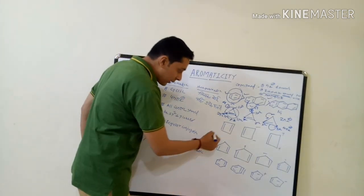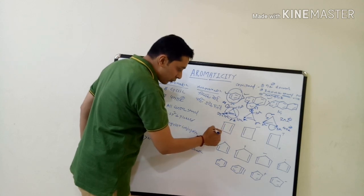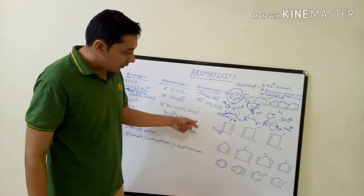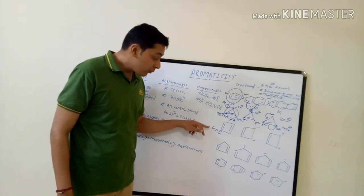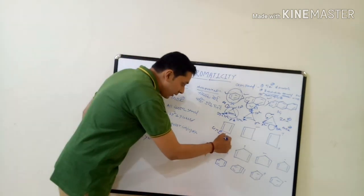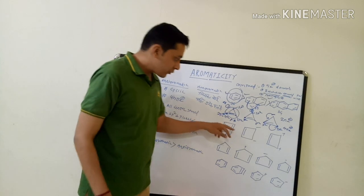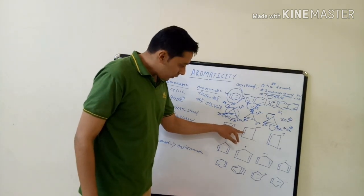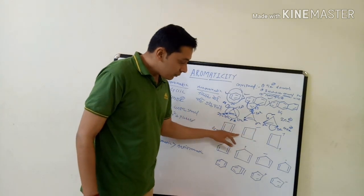Next, the four-membered ring: it also has two pi electrons plus two pi electrons, giving a total of four pi electrons. The structure is cyclic, planar, in regular conjugation, and has four pi electrons following the 4n rule — so it is anti-aromatic.